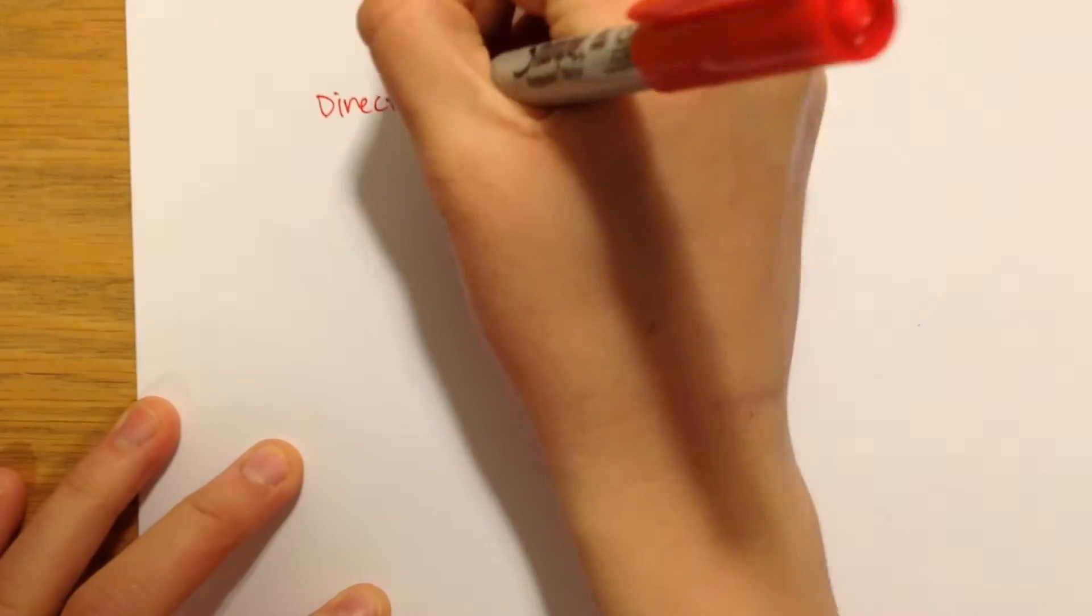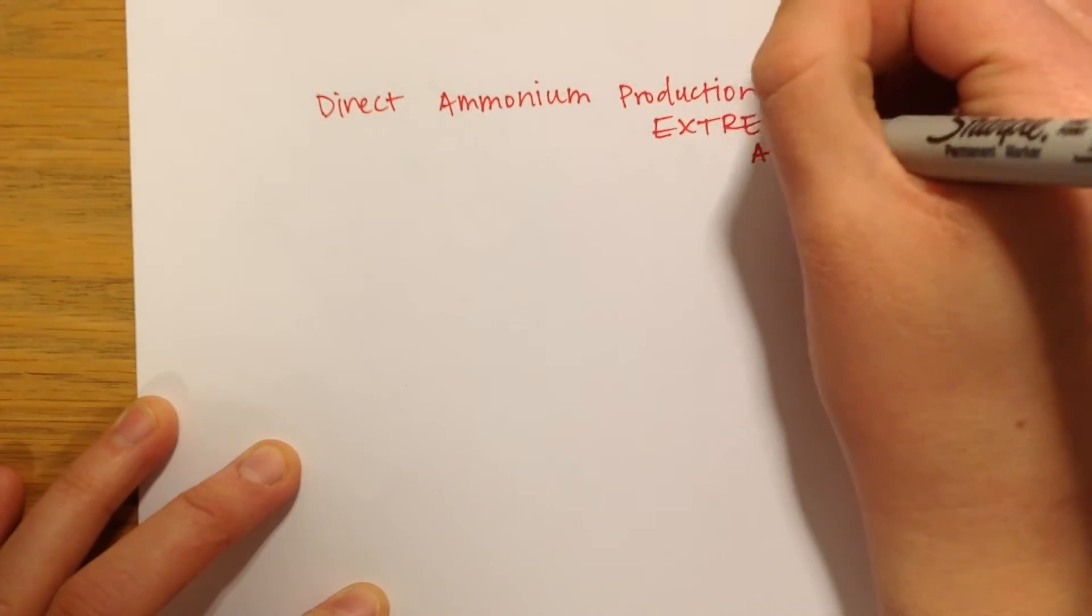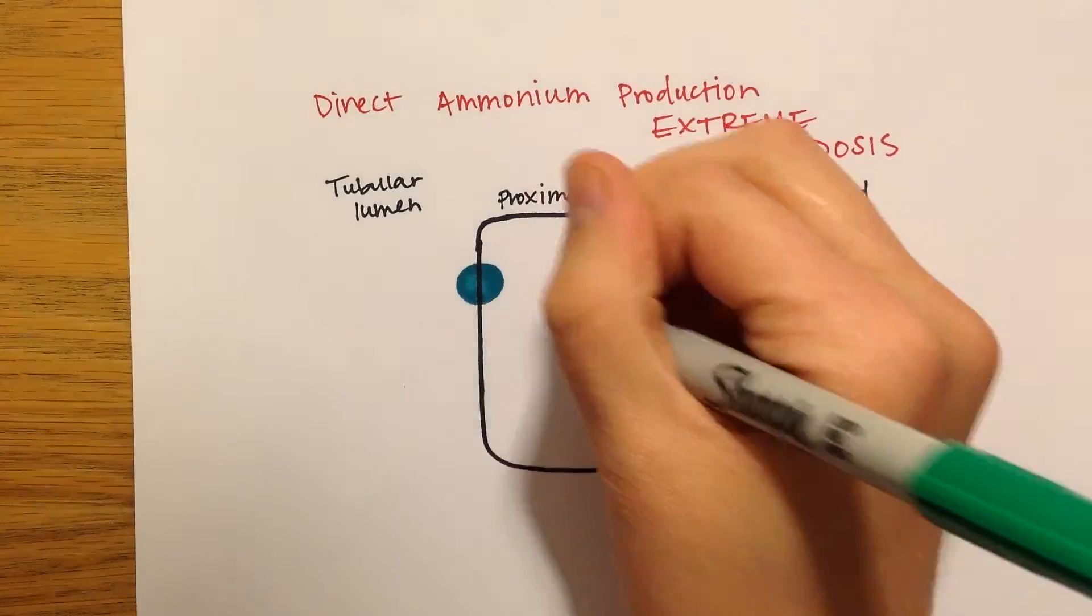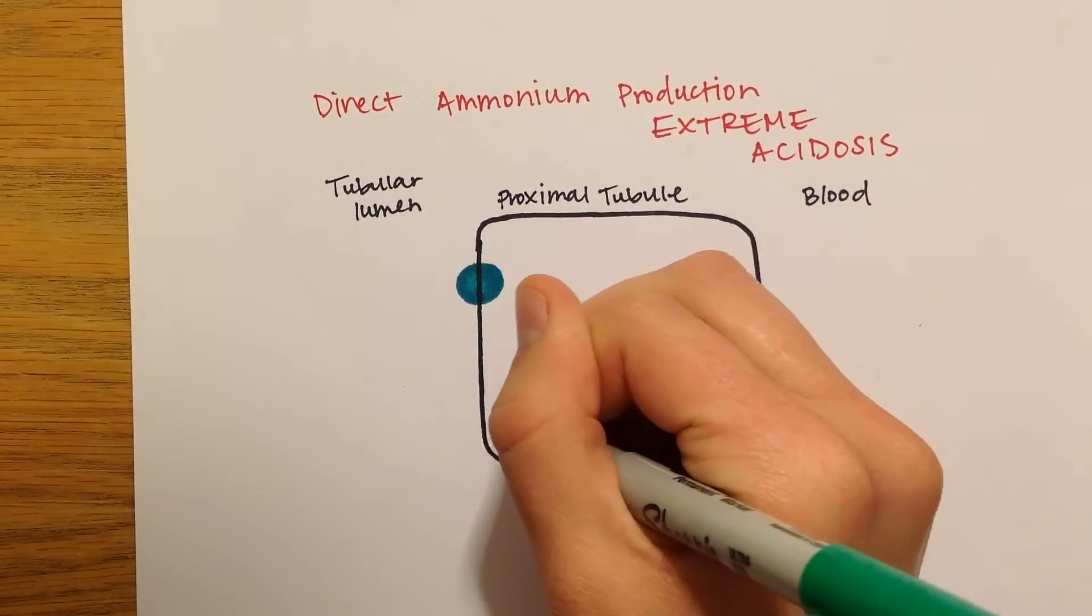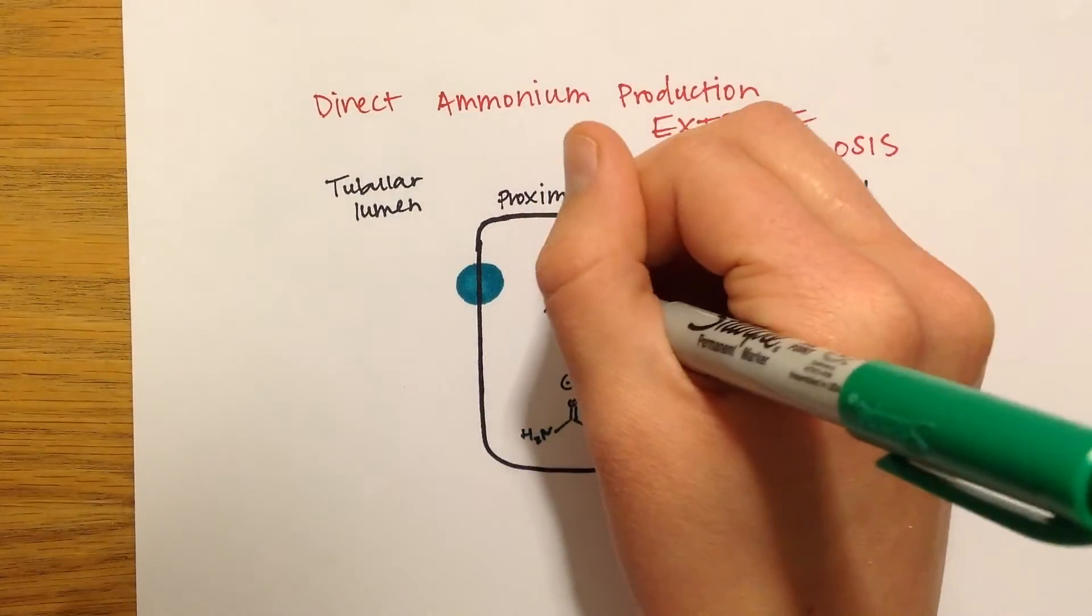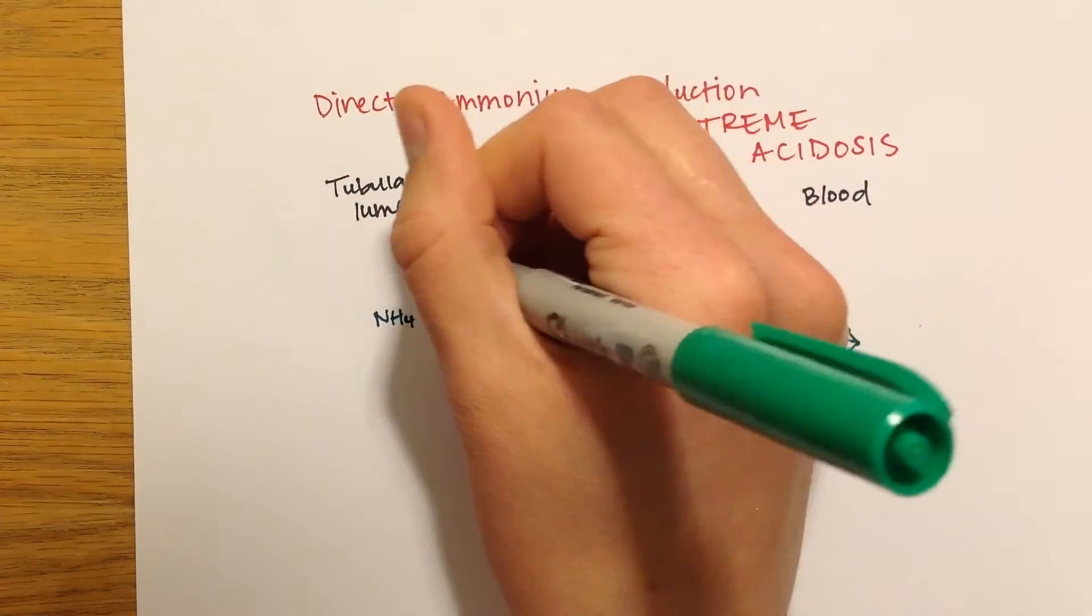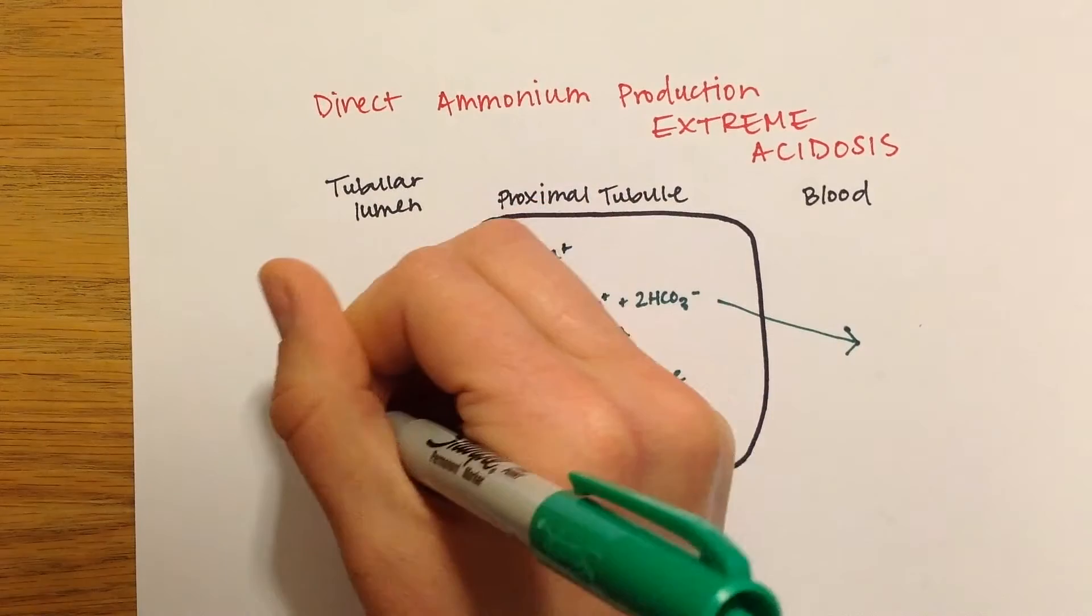When acidosis is extreme and long-lasting, another mechanism is activated to synthesize more bicarbonate. This involves the metabolism of the amino acid glutamine in the cells of the proximal tubule, thick loop of Henle, and distal tubule. This process generates two new bicarbonates for each glutamine metabolized.